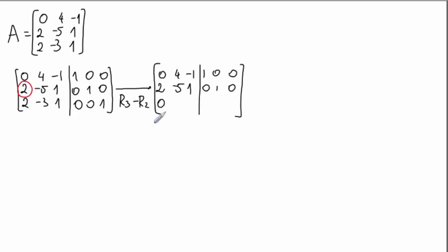Computing the new third row: 2 minus 2 is 0; minus 3 plus 5 gives 2; 1 minus 1 is 0; 0 minus 0 is 0; 0 minus 1 is negative 1; and 1 minus 0 is 1.